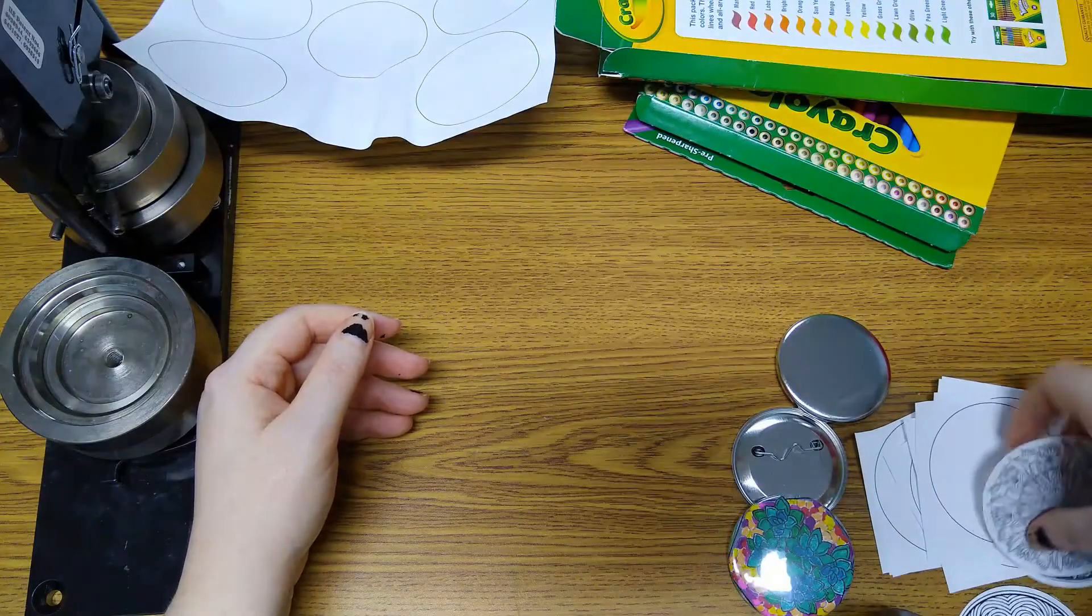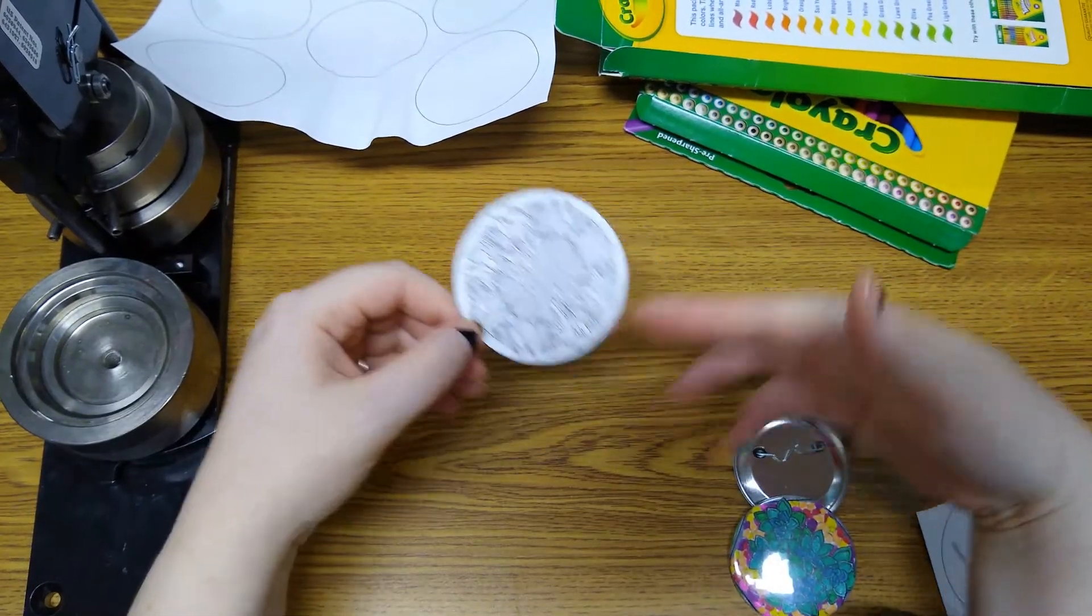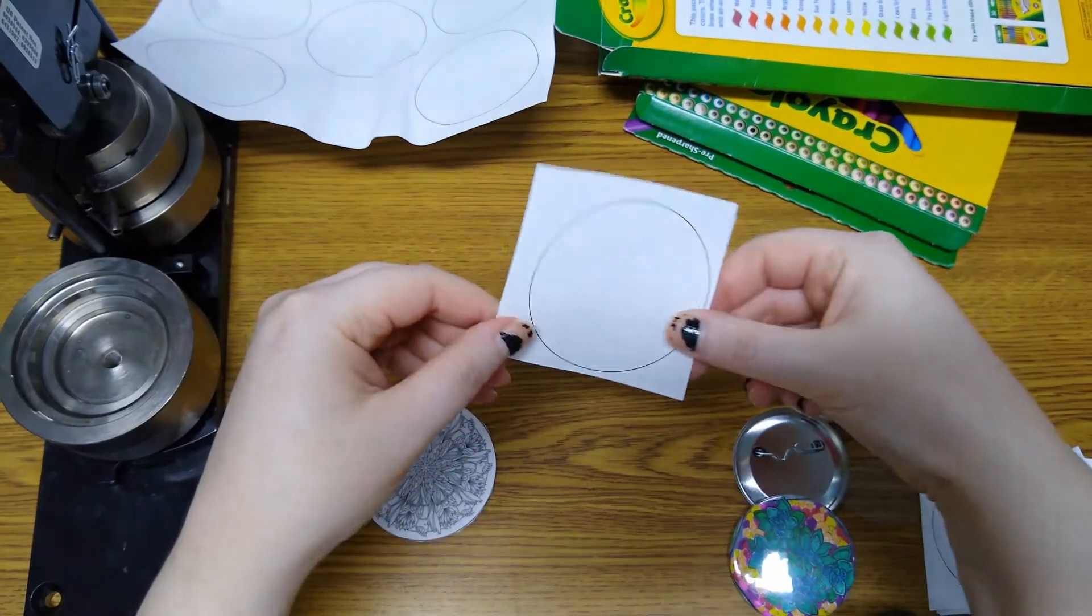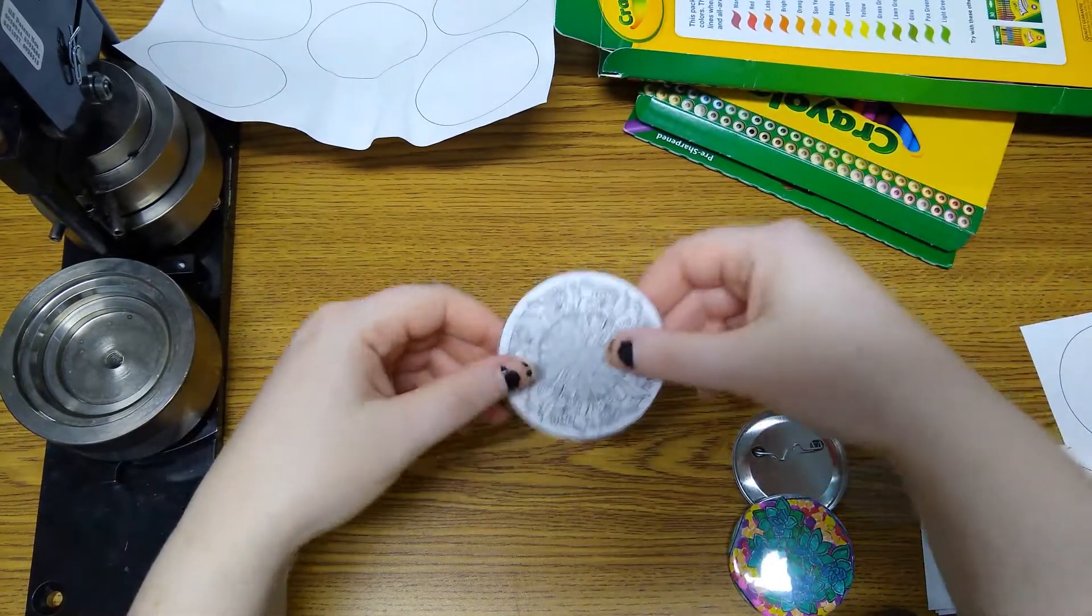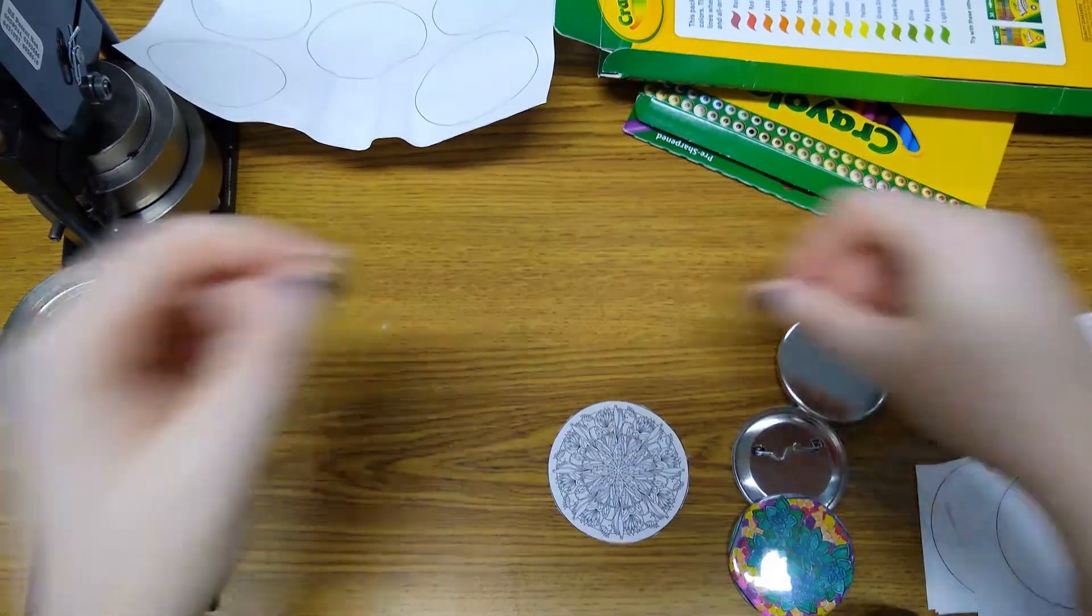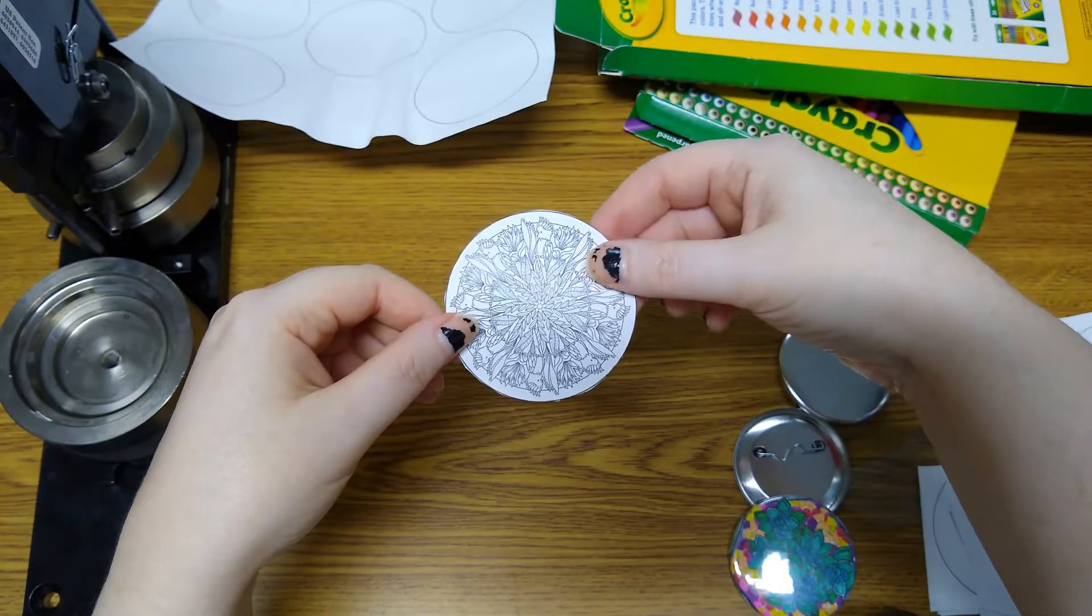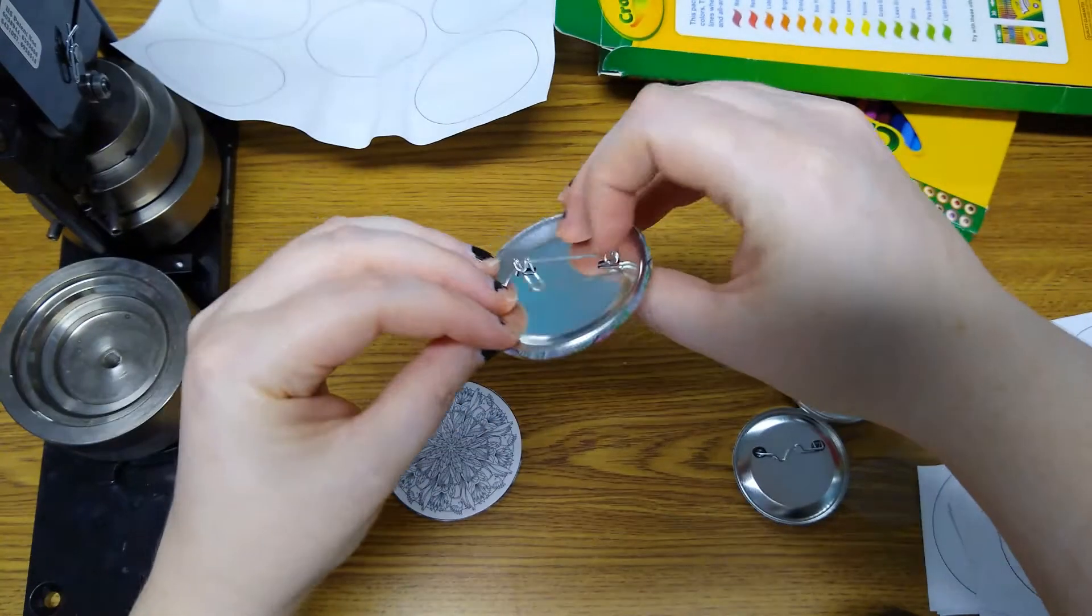When you choose your template, you want to go ahead and cut the circle out, or at least cut a smaller square around the circle, and then you're going to color it. You can use colored pencils, markers, or crayons. I find that the markers stand out brighter than the colored pencils.